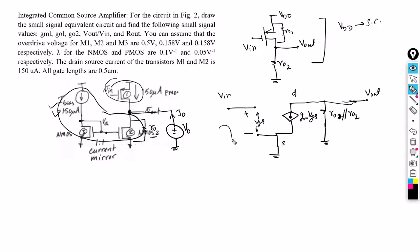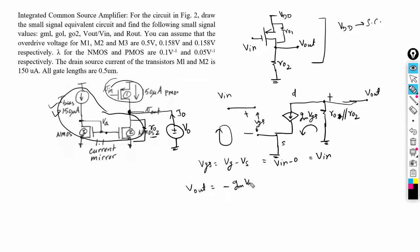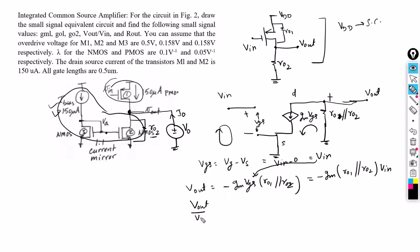From the input side, Vgs = Vg − Vs = Vin − 0 = Vin. From the output side, the Gm·Vgs current source drives the parallel combination RO1 ∥ RO2. Taking the sign convention into account, Vout = −Gm·Vgs·(RO1 ∥ RO2). Substituting Vgs = Vin, we get Vout = −Gm·(RO1 ∥ RO2)·Vin, so Vout/Vin = −Gm1·(RO1 ∥ RO2).